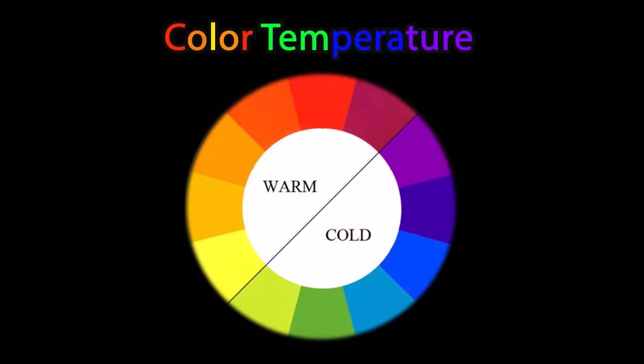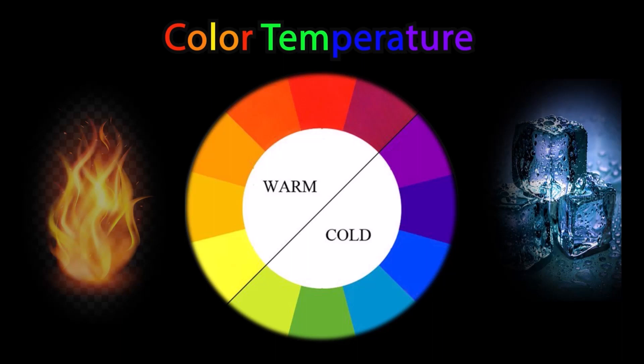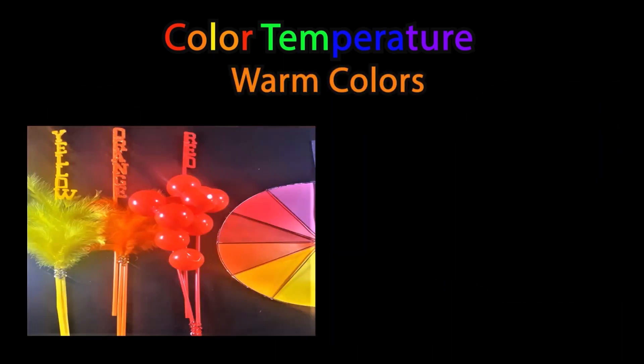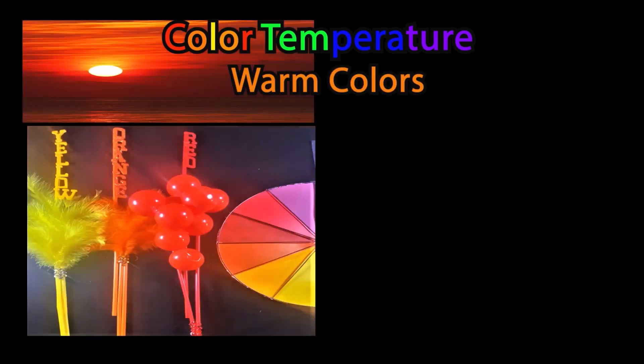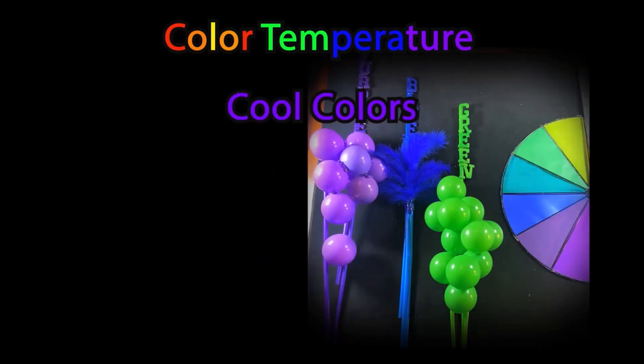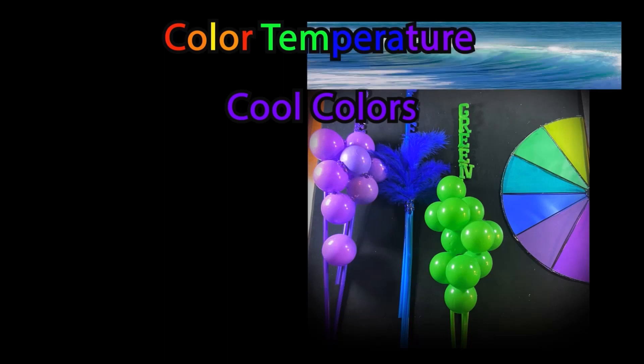Color temperature. Color temperature can be thought of like fire and ice. Warm colors are like a sunset slice. Cool colors are purples, blues, and blue greens, like a refreshing ocean water scene.